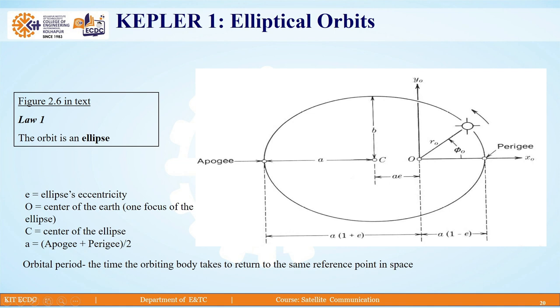We can rewrite the equation for A. A is equal to (apogee + perigee)/2. And orbital period is the time the orbiting body takes to return to the same reference point in space.